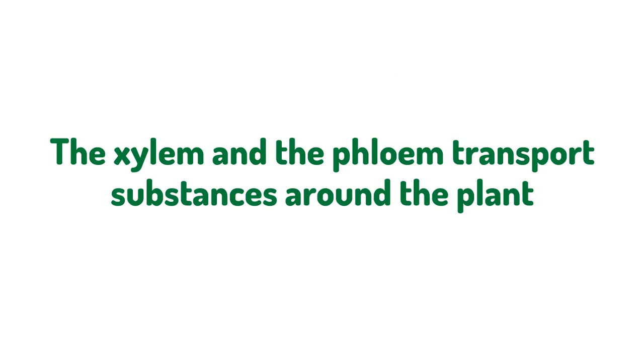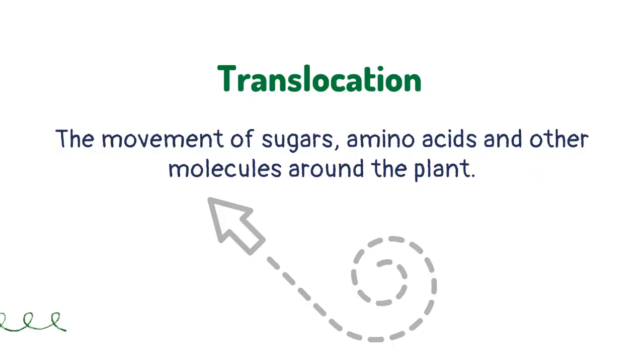The xylem and the phloem transport substances around the plant. Translocation is the movement of sugars, amino acids and other molecules around the plant.